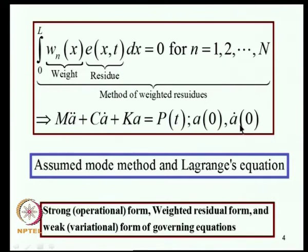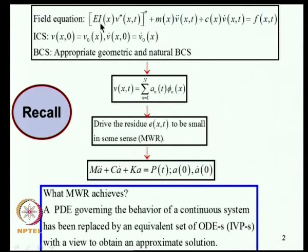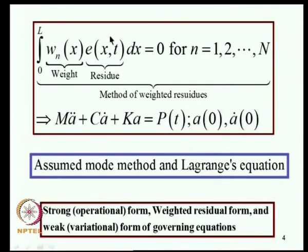Implementation of this method requires choices to be made on two quantities: trial functions and weight functions. The residue has fourth derivative terms present in the beam example, so consequently the trial functions need to be differentiable up to fourth order, whereas the weight function does not - no such requirements need be imposed on the weight function.